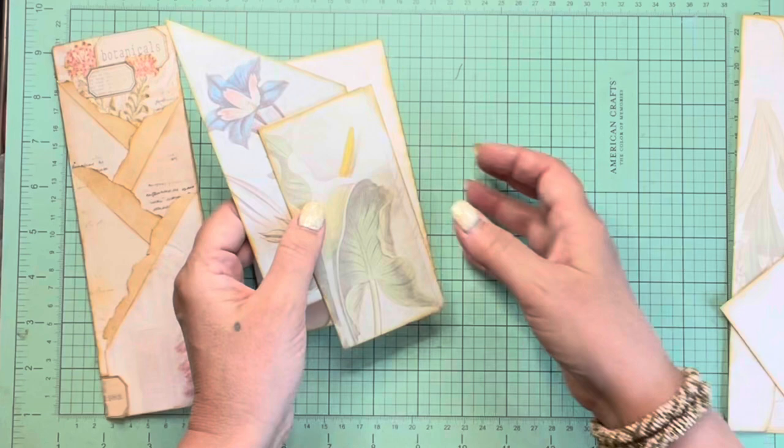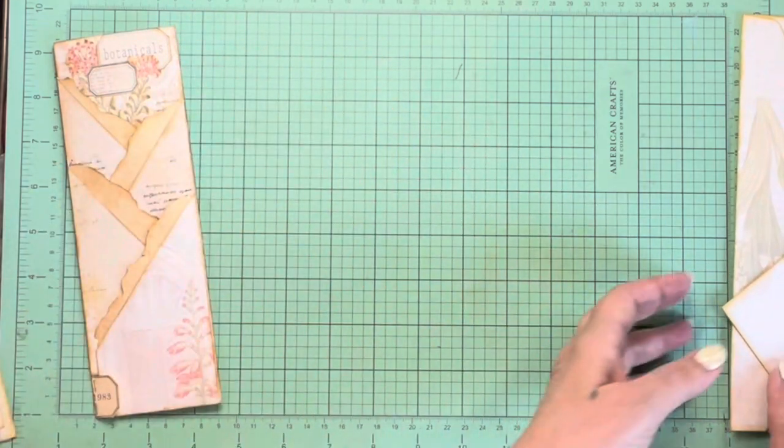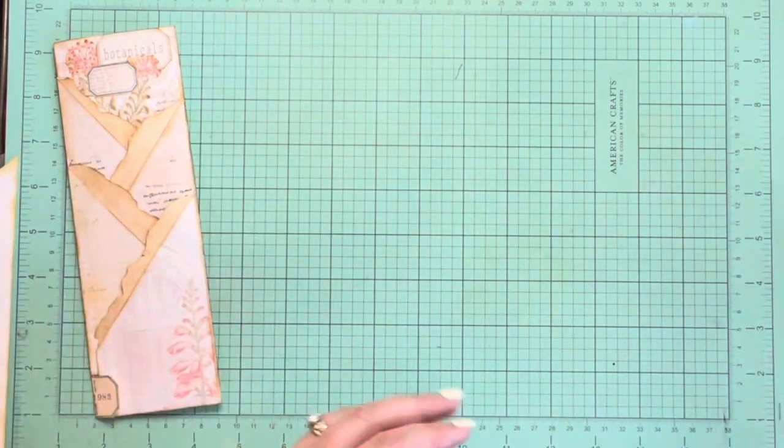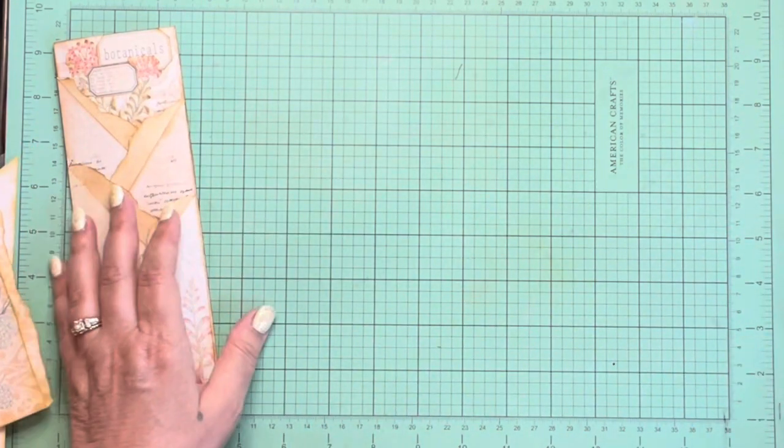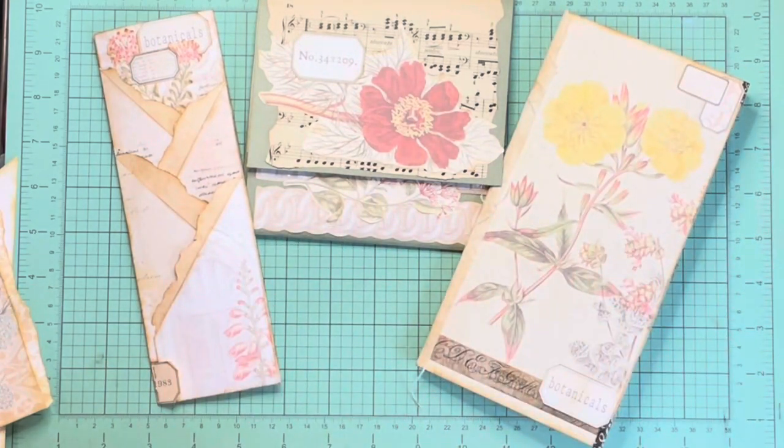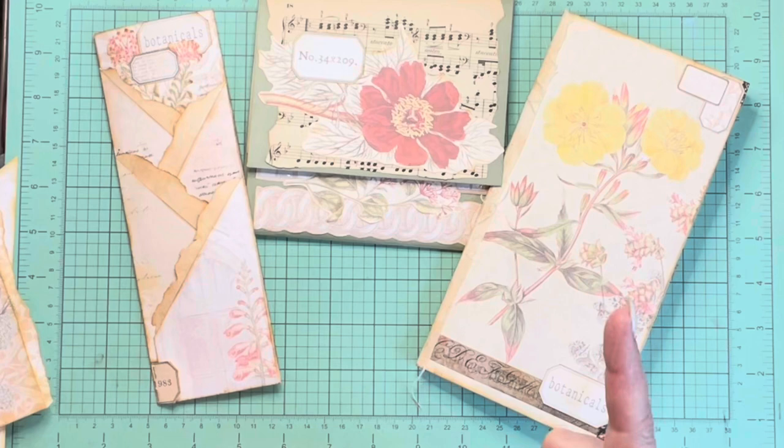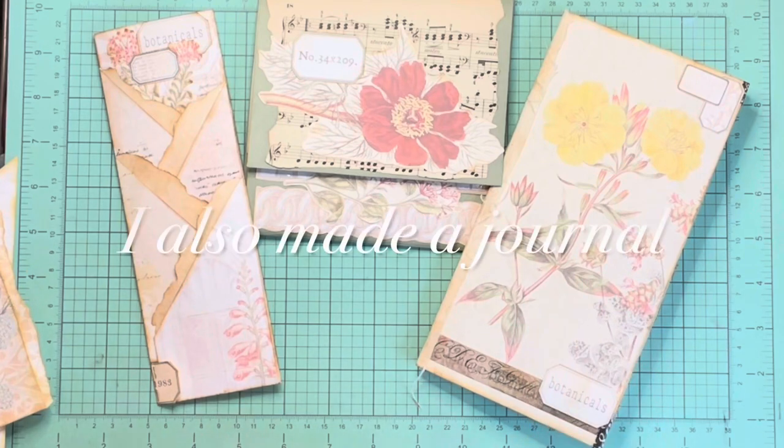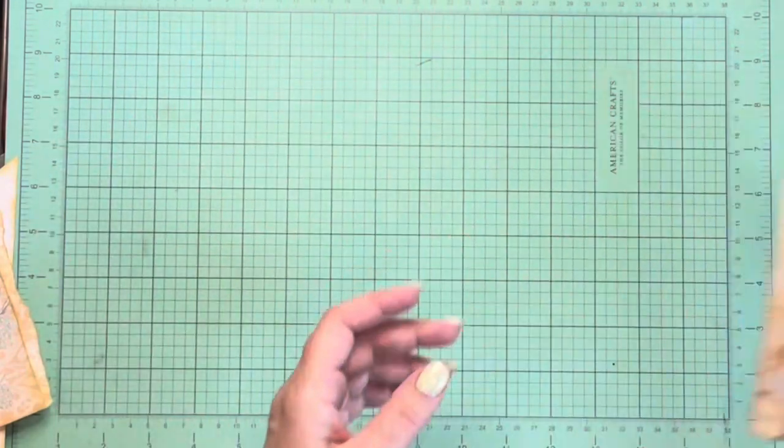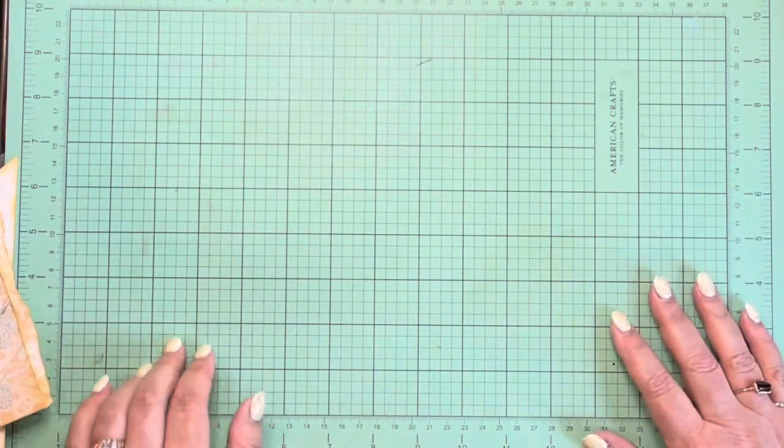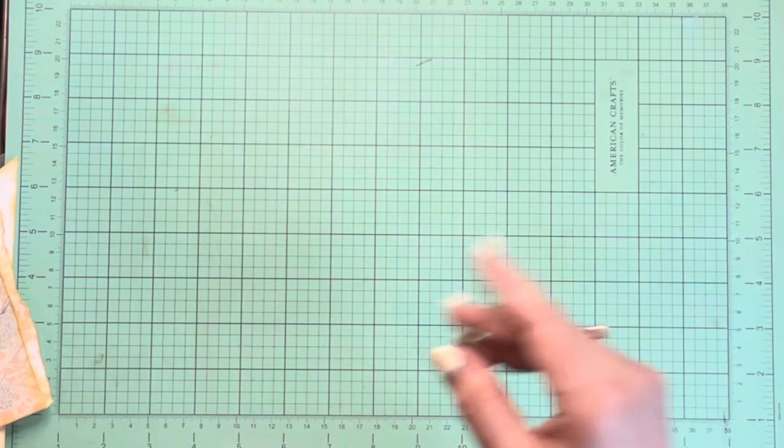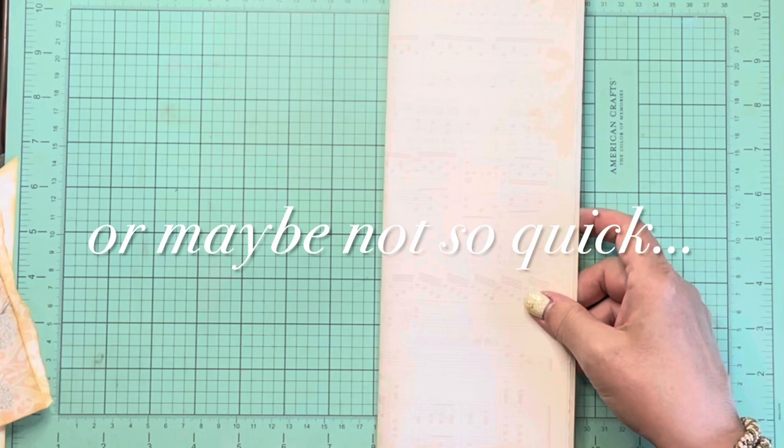These were pieces from the kit. I made this, and this, and this as a part of that design team. I'm revisiting it because I've got enough stuff just from these kits to make a few more journals. Today I'm going to really quick make a long, tall journal.